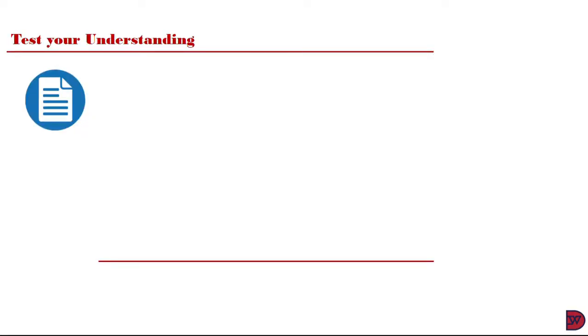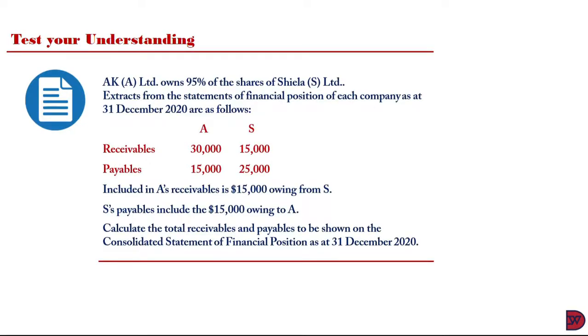Let's test our understanding. AK (A Limited) owns 95% of the shares of Sheila Limited (S). The extract from the statement of financial position of each company as at 31 December 2020 are as follows. Included in A's receivable is $15,000 owing from S. S's payables include the $15,000 owing to A. Calculate the total receivables and payables to be shown on the consolidated statement of financial position as at 31 December 2020.